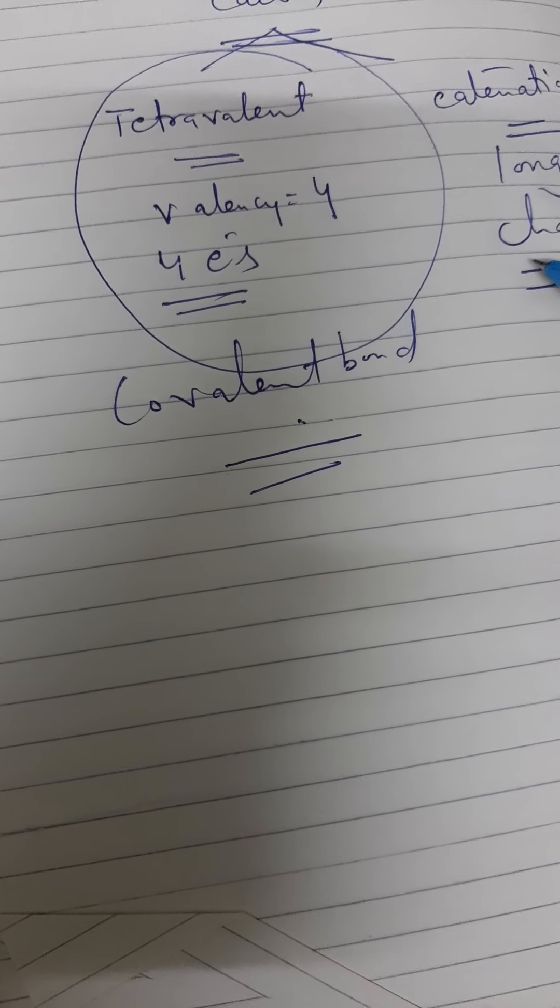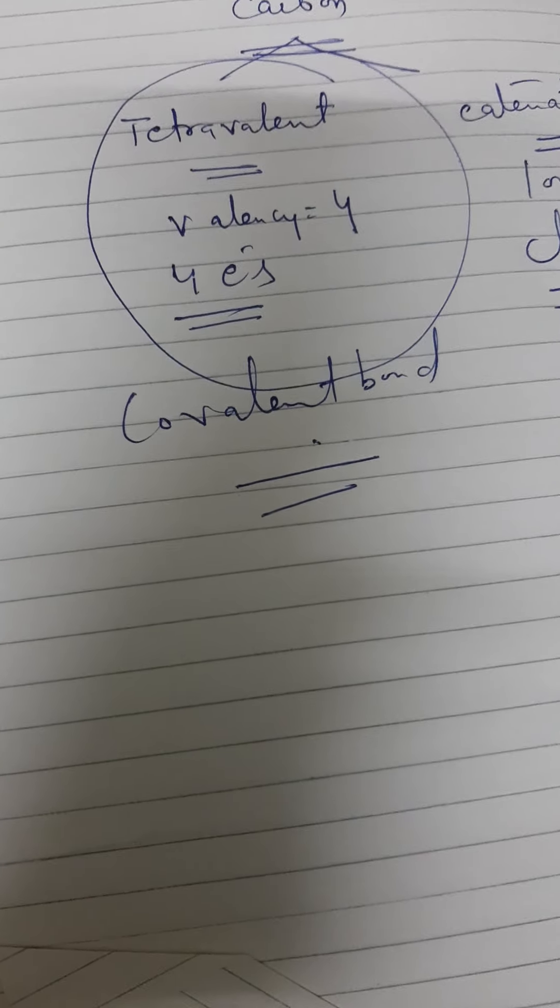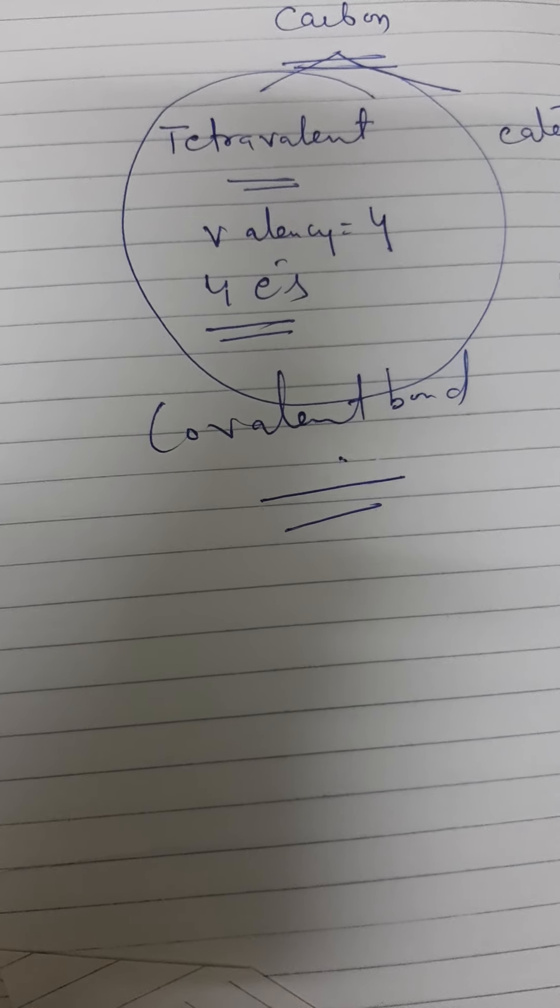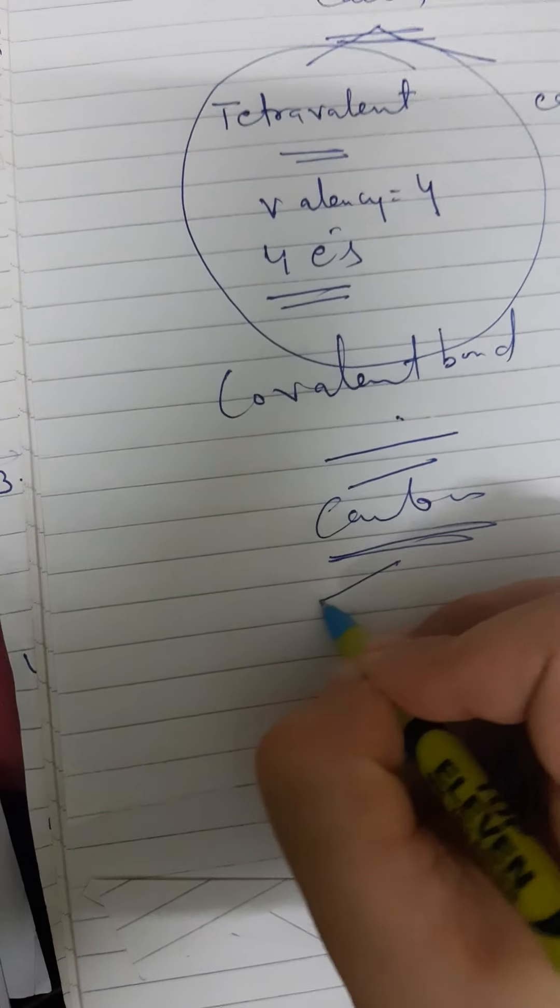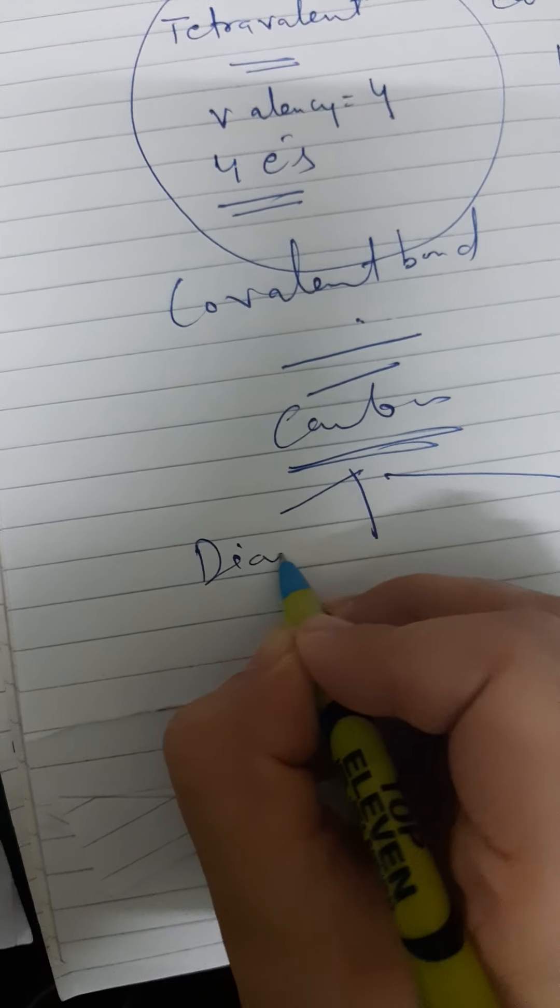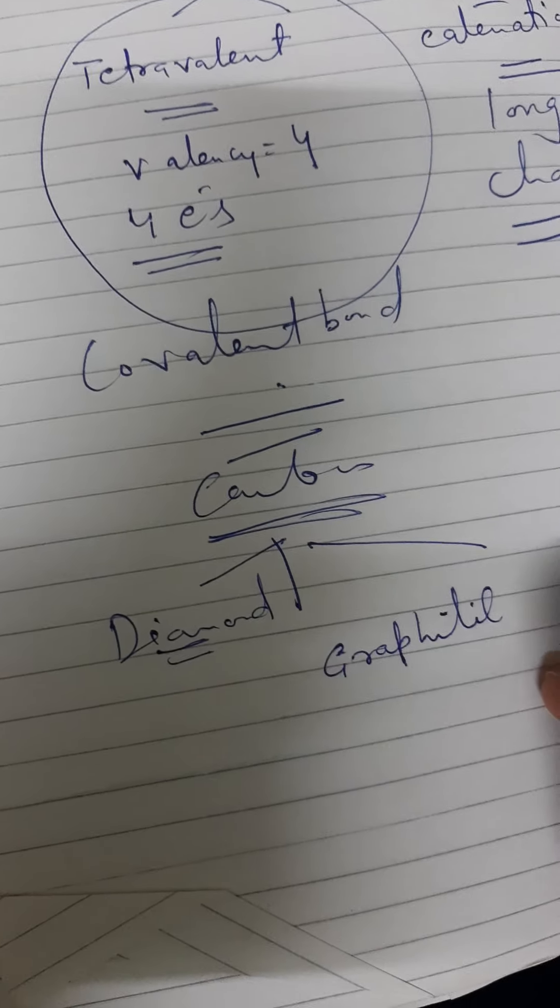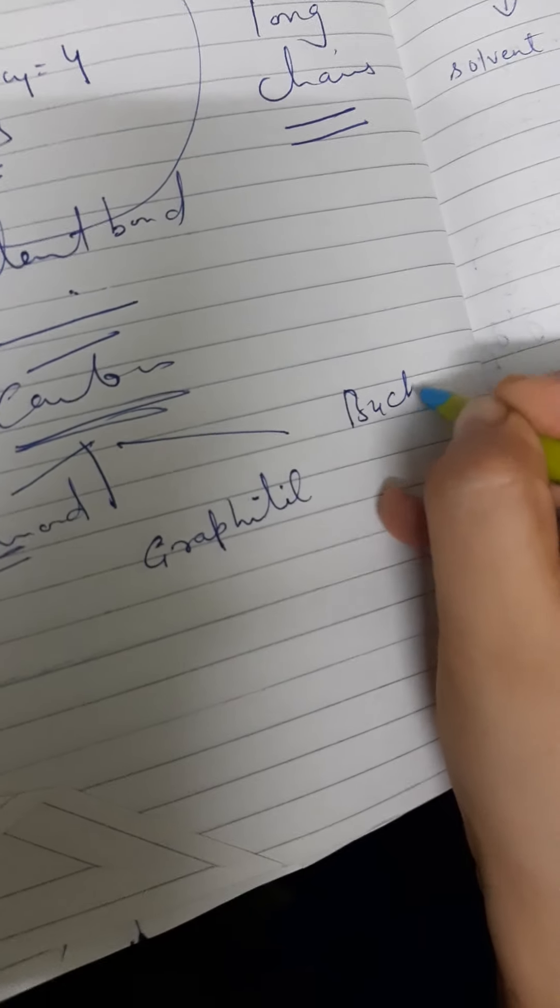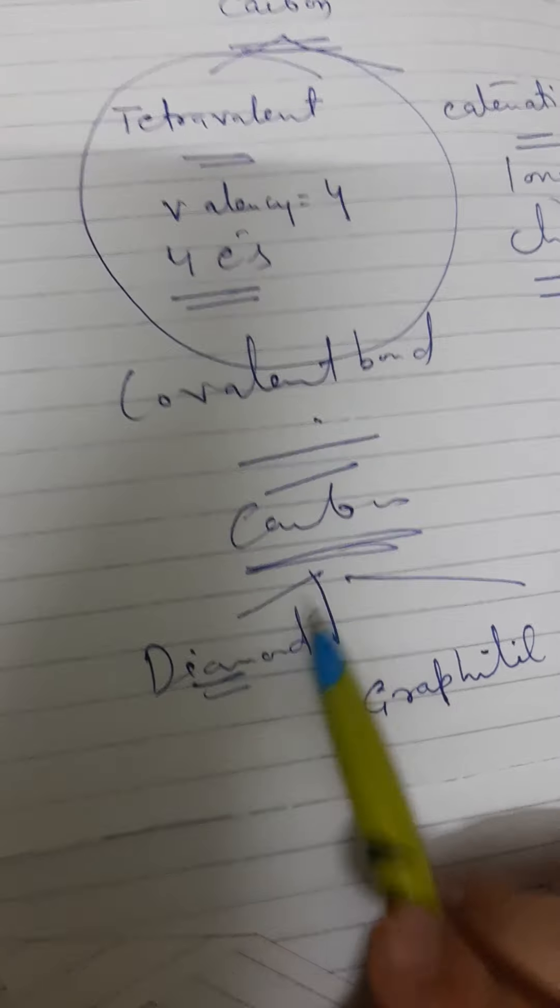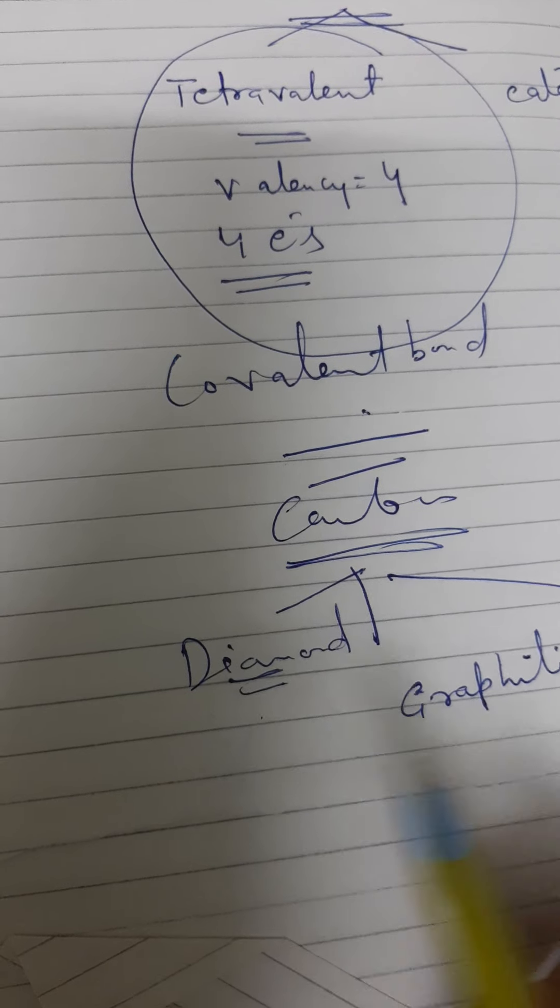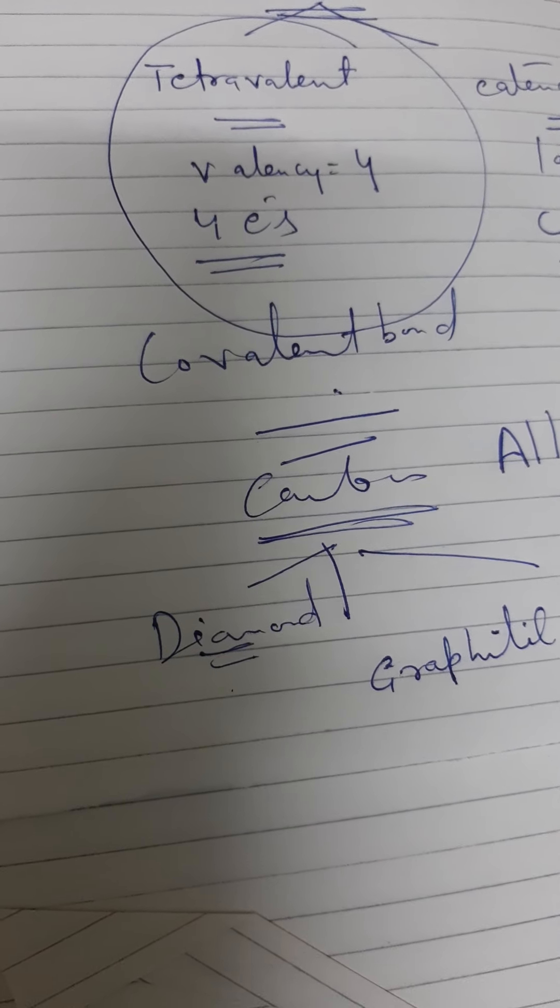Now what are the allotropes of carbon? The various physical forms in which an element can exist is known as allotropes of that particular element. Carbon has basically 3 allotropes. In this chapter we'll discuss 3 allotropes: Diamond, graphite, and buckminsterfullerene. These are the 3 allotropes of carbon. Allotropes means the various physical forms in which an element can exist.